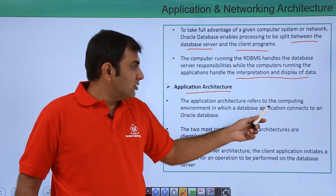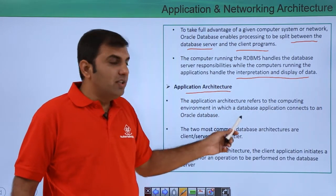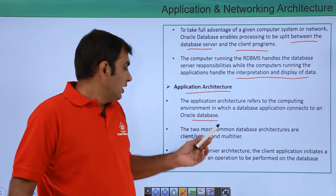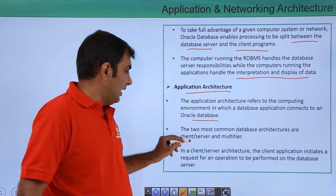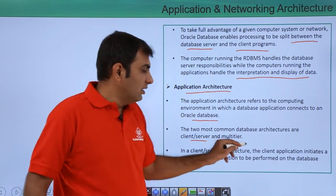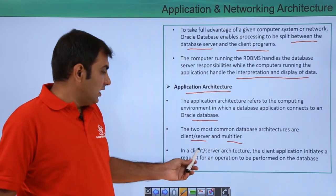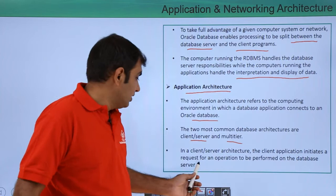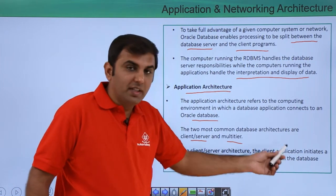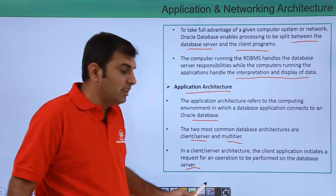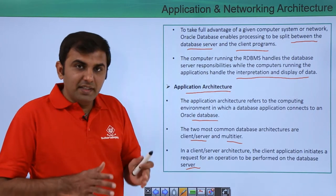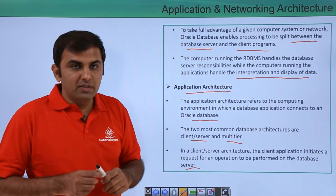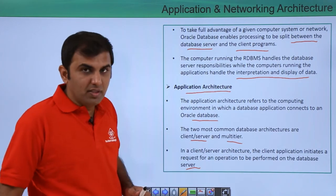The application architecture refers to the computing environment in which a database application connects to the Oracle Database. The two most common database architectures are client-server architecture and multi-tier architecture. In the client-server architecture, the client application initiates the request for an operation to be performed on the database server. The client sends the request to the server, the server processes the request and sends it back to the client.